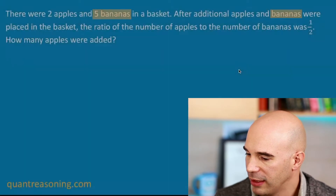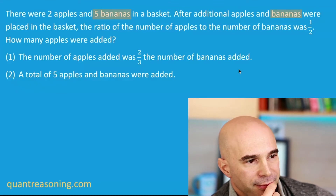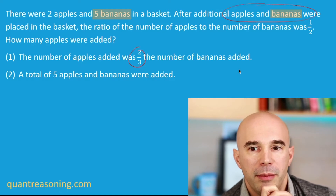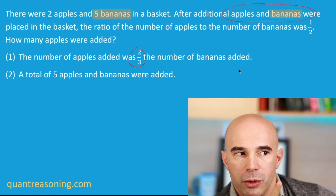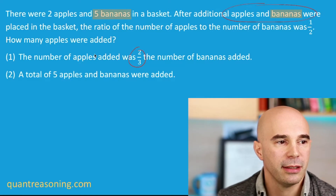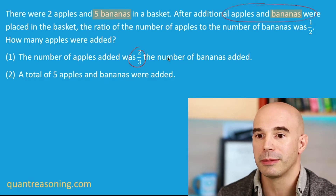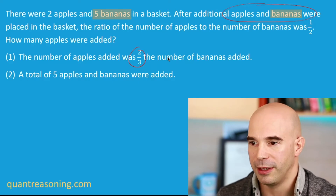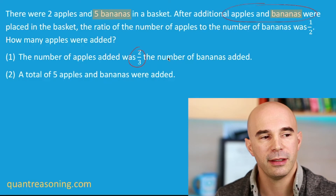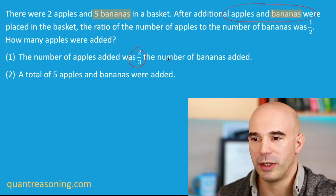Let's look at the statements now and see if we're able to evaluate them without pen and paper. Let's start with statement one, even though it's the much harder statement to evaluate. If we knew that for the new ratio of apples to bananas it was exactly two-thirds APB, without putting pen to paper, would you be able to infer the actual number of apples added? Whatever the number of bananas was, the number of apples was two-thirds of that.